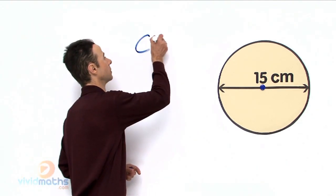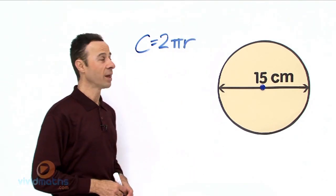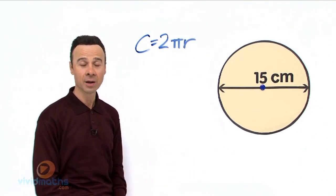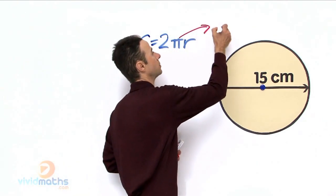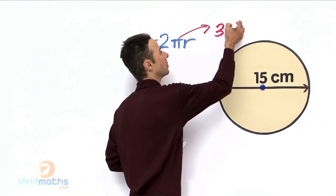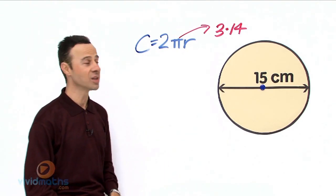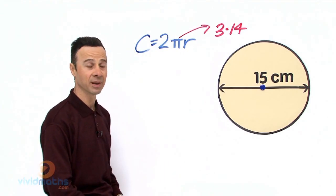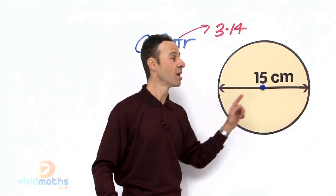where we have pi approximated to 3.14. Now, the radius in this particular example does not seem to be here because we are not given the radius. We are given the diameter all the way across, 15 cm.